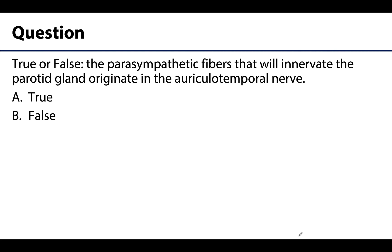True or false: the parasympathetic fibers that will innervate the parotid gland originate in the auriculotemporal nerve? This is false. The parasympathetic fibers that innervate the parotid gland originate in the glossopharyngeal nerve, or cranial nerve 9. The postganglionic parasympathetic fibers synapse in the otic ganglion and then hitch a ride to the parotid gland via the auriculotemporal nerve — that is where the auriculotemporal nerve comes into this process.